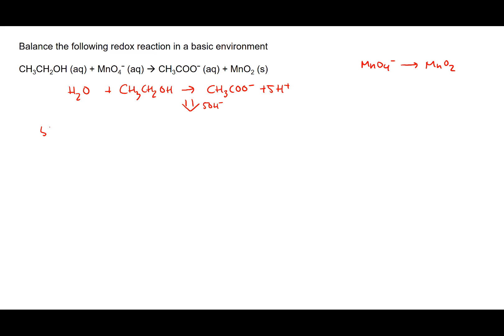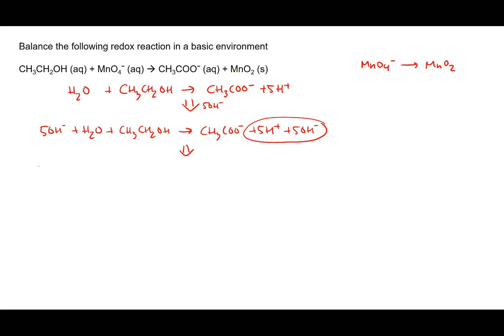So what we get is 5OH- plus H2O plus ethanol forms CH3COO- plus 5H+ plus 5OH-. The H+ and OH- neutralize each other and turn into H2O. So we write out everything after neutralizing those two, and what we get is 5OH- plus H2O plus CH3CH2OH forms CH3COO- plus 5H2O.